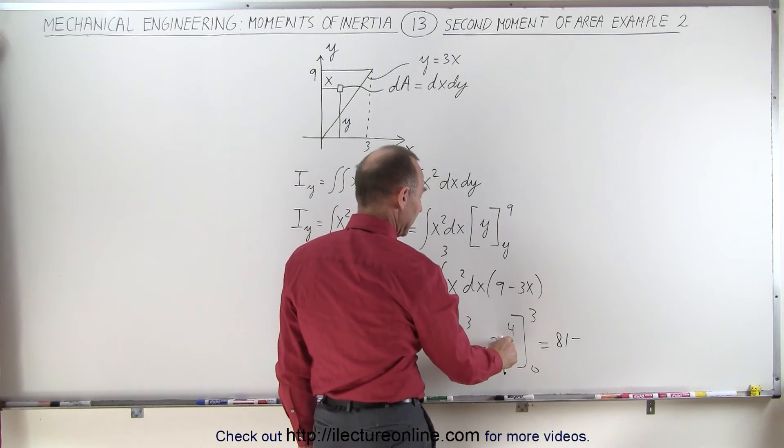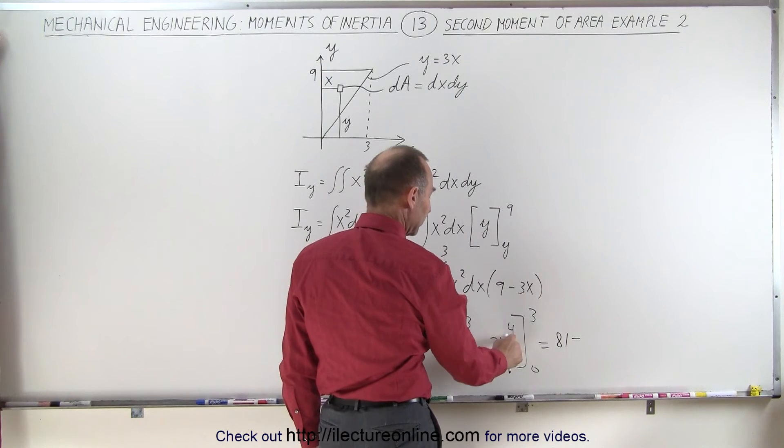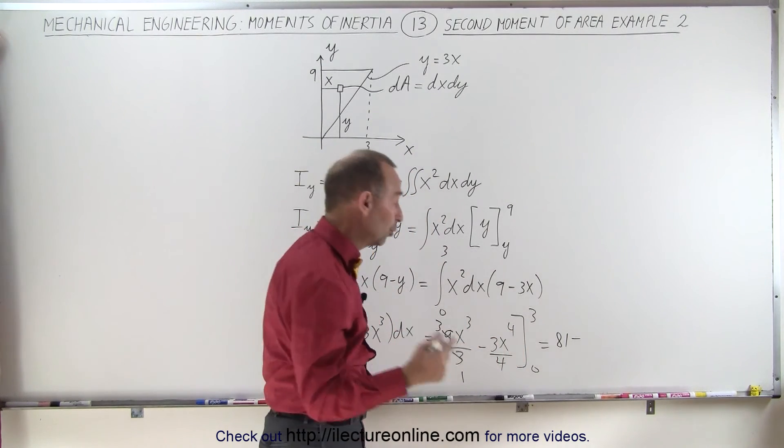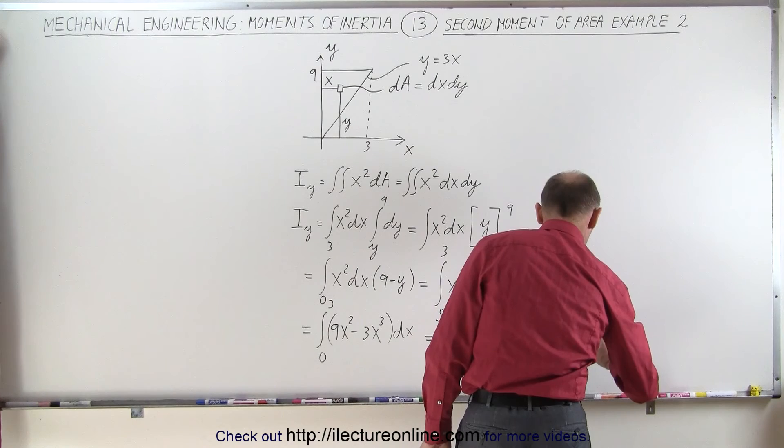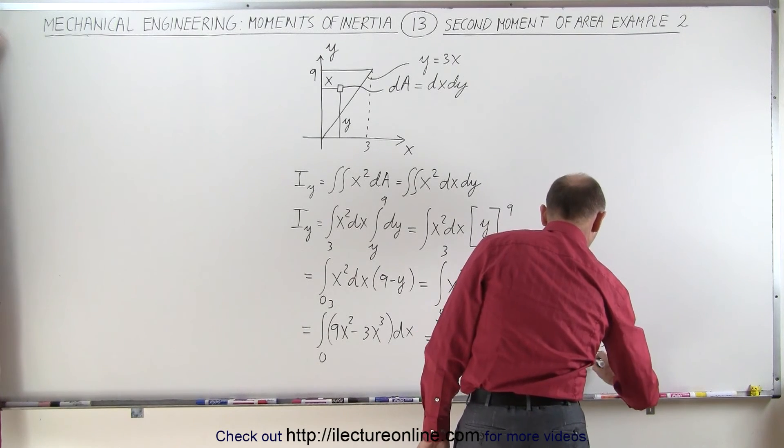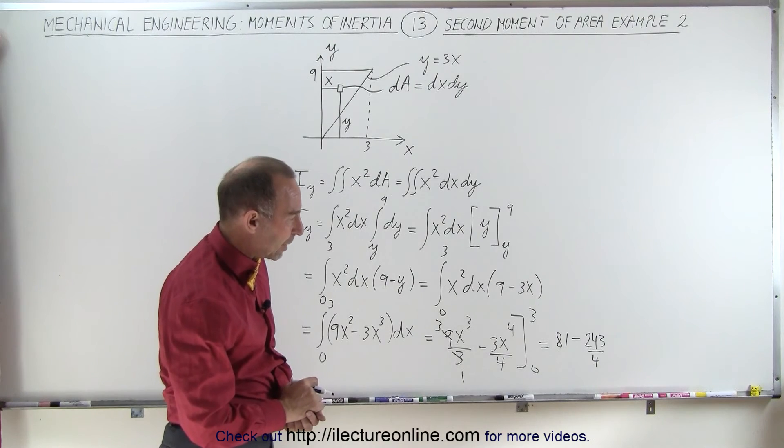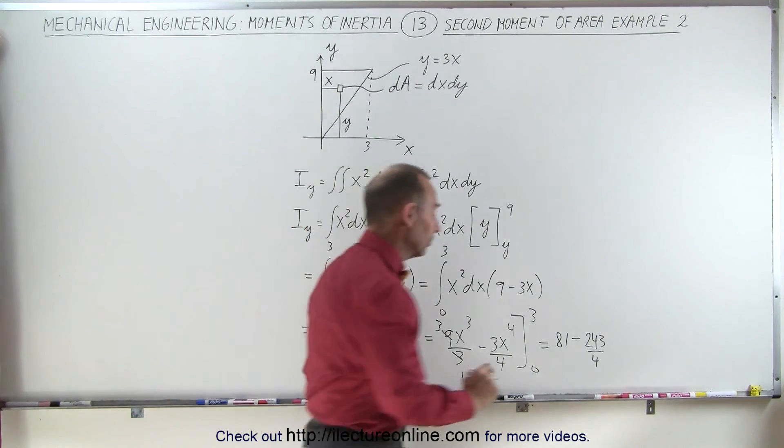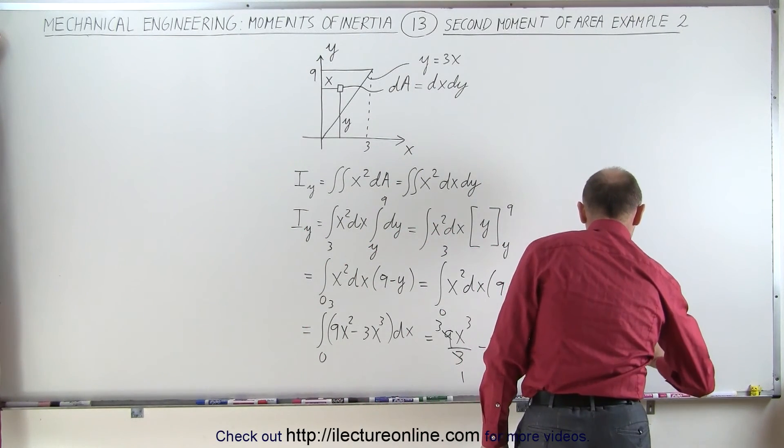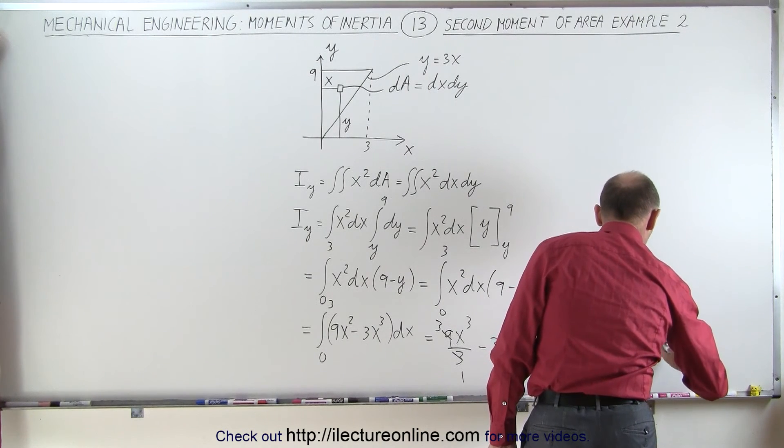Minus here we get 3 to the 4th power times 3, that's 81 times 3, which is 243, divided by 4. Now 4 goes into 243 about 60 and 3 quarter times, so this is equal to 81 minus 60 and 3 quarters.